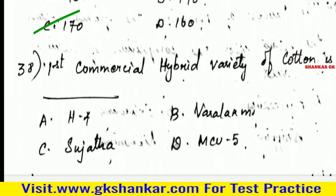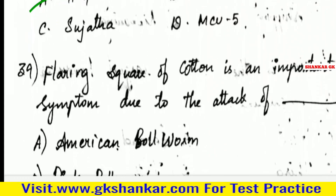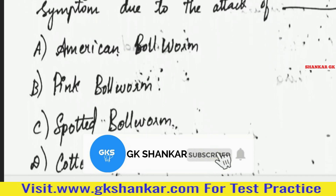Thirty-eighth question: First commercial hybrid variety of cotton is — A. H4, B. Varalakshmi, C. Sujata, D. MCU 5. Answer: A. H4.